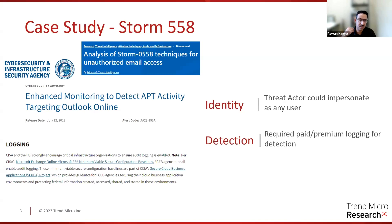Several organizations were affected, and CISA went ahead and released an advisory on that. One of the interesting things about this incident was that detection required paid premium subscription logging. You have to pay extra money to get those logs. So one other issue in the cloud is just being able to identify a threat. Identity, the importance of managing and saving your keys, and being able to detect a certain threat were all highlighted.